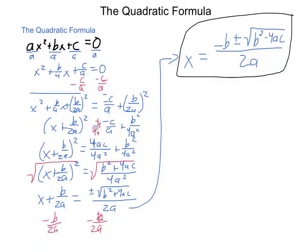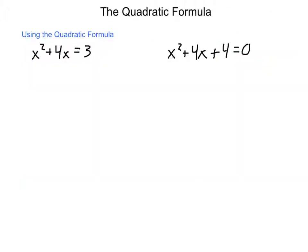Anytime you have ax squared plus bx plus c equals 0, you can solve it using this form. Now this is a lot of work involving substituting values in and then simplifying. So let's get some practice. Here are a pair of problems to work with. The first one: x squared plus 4x equals 3. In order to use the quadratic formula, it has to be in the form equal to 0, so I'm going to subtract 3 from each side, giving x squared plus 4x minus 3 equals 0.